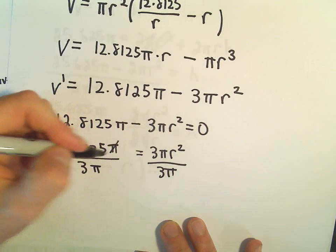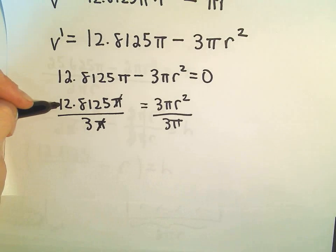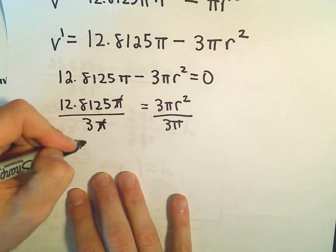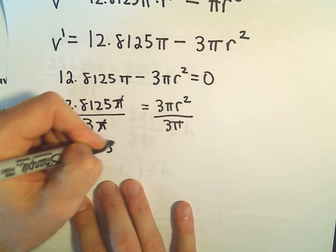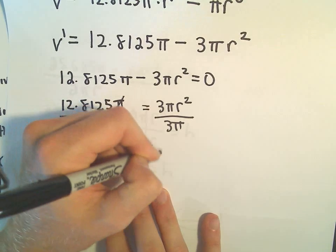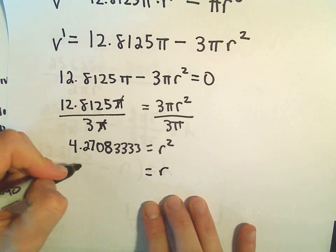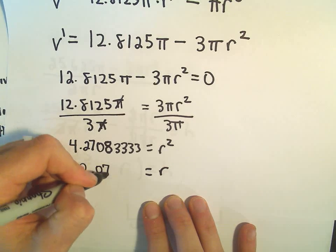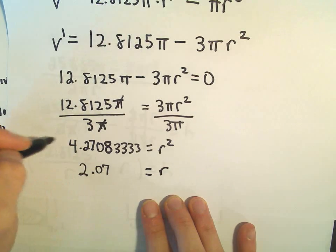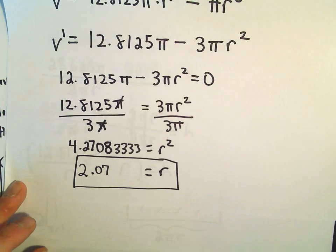Hey, it looks like here the π's are just going to cancel out, which is nice. And then we have 12.8125 divided by 3. That'll give us 4.27083333. That's going to be our R² value. So when we take the square root of this, I'm getting 2.07 after rounding. And normally you get positive and negative, but certainly our radius is going to have to be positive in this case.